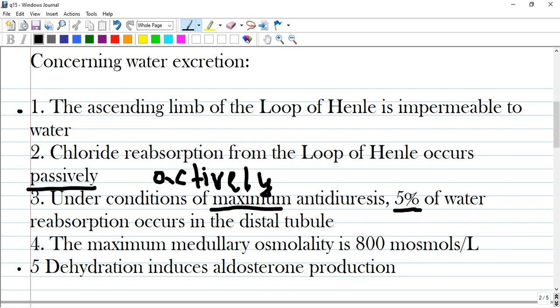Option 4: The maximum medullary osmolarity or osmolality is 800 milliosmoles per liter. It is wrong because this number is much higher.